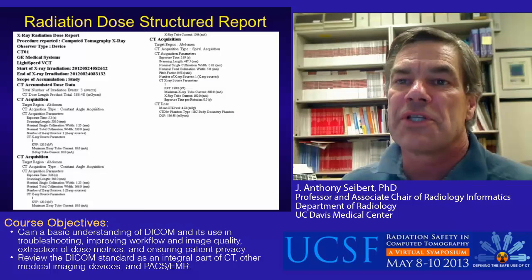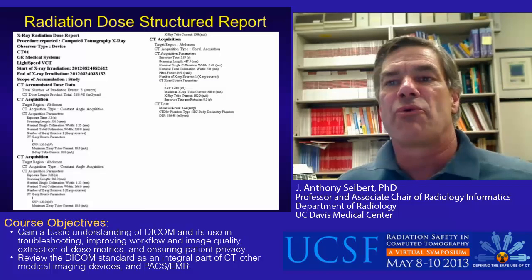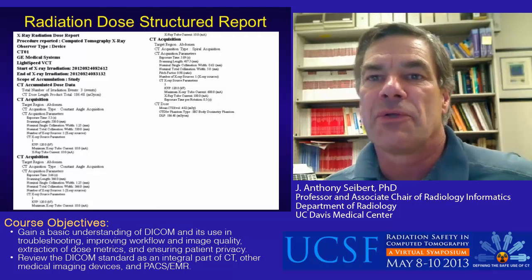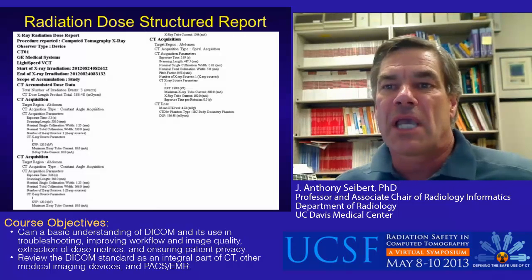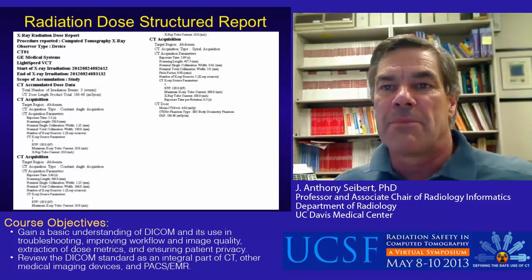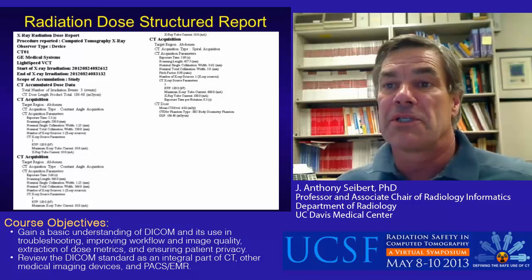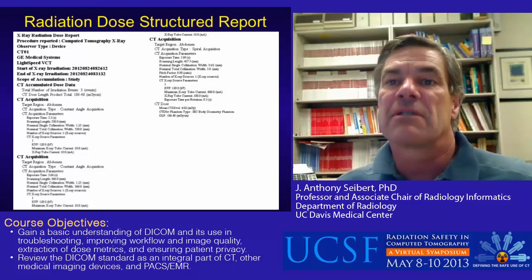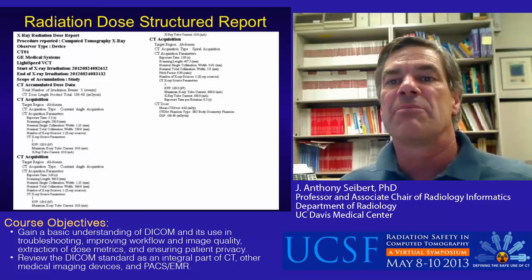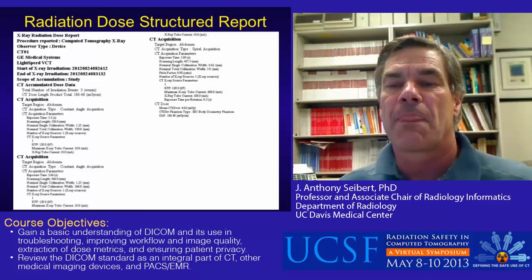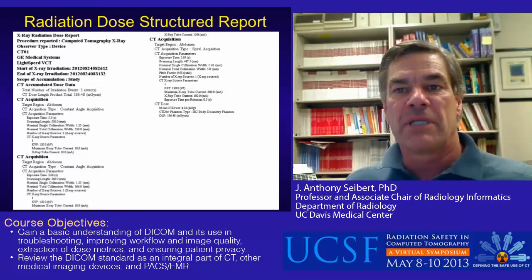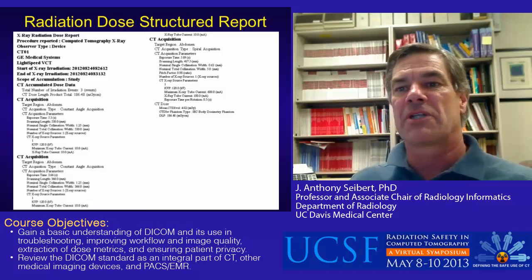Shown in this example is the Radiation Dose Structured Report by a manufacturer. Listed are each of the radiation events, including the localizers and the actually scanned image, with pertinent details such as region scanned, type of acquisition — spiral helical in this example for the third acquisition event — acquisition parameters with CTDI-VOL, DLP, and the phantom used for CTDI calibration. The RDSR simplifies the efforts of accurate and complete dose information extraction in CT.